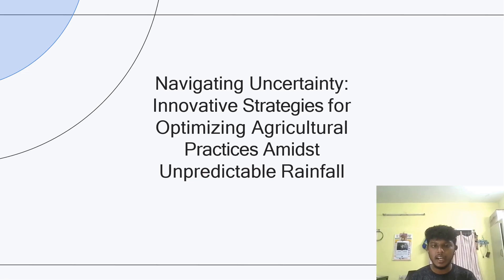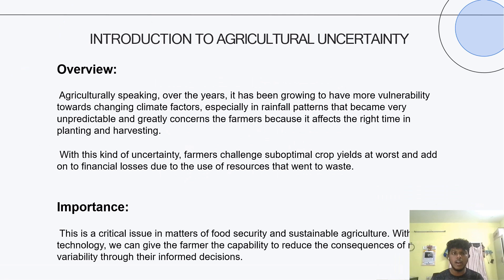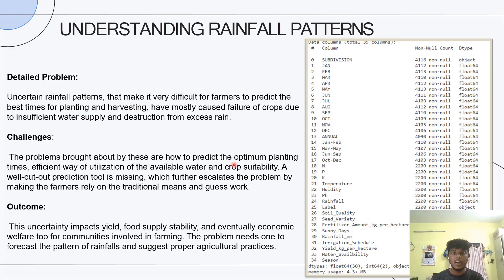The problem we have chosen is optimizing agriculture amidst unpredictable rainfall. The need is that over the years, due to global warming and various factors, agricultural output has been affected by not just seasons but various features like rainfall, soil value, fertilizer, unpredictable rainfall, irrigation schedule, and yield per hectare.